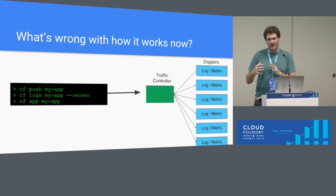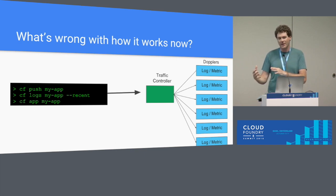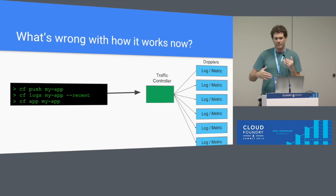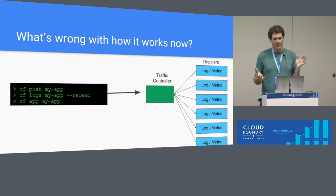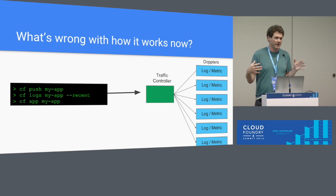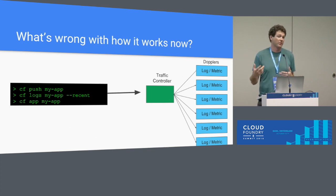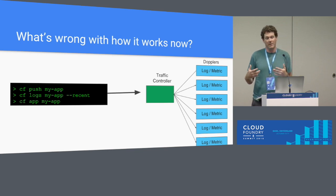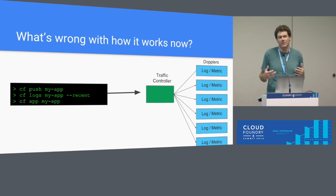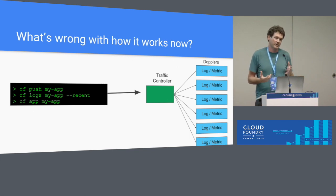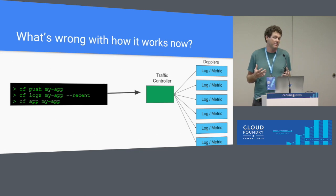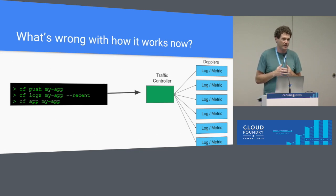It also has to wait on the network connection over to the Doppler. And if you're in a large foundation, if you've ever seen your app return zero for container metrics, that's the Loggregator system triggering a circuit breaker. The metrics in that case aren't actually zero — it's that we couldn't make sense of the requests that we got from the Dopplers. And to avoid a timeout and an error, especially in CF push, we're returning zero in that circumstance.